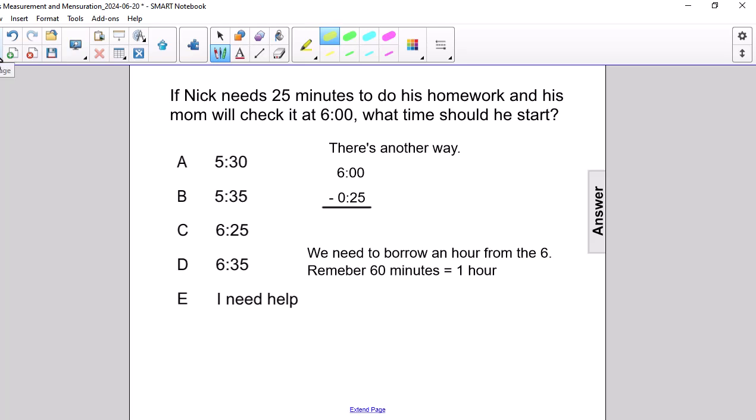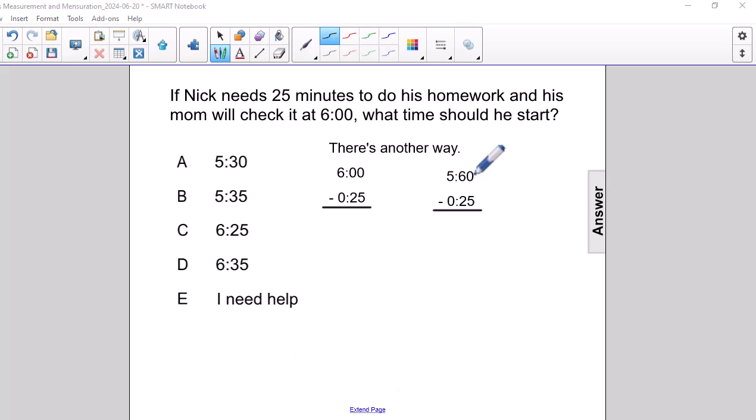So, I'm going to rewrite the 6 o'clock as 5:60. I borrow an hour from the 5 and add it to the minutes for 60 minutes. So, I start off over here with 0 minus 5. I still need to borrow again. So, I'm going to borrow from the 60. Make that a 50.